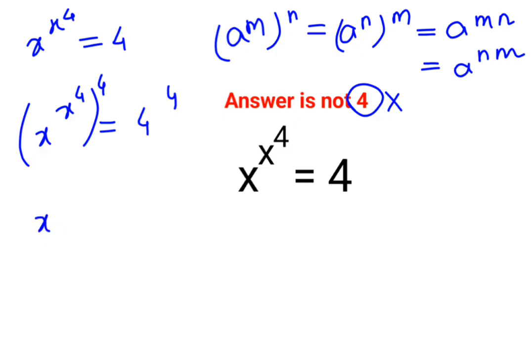So here, instead of taking this 4 outside, I can shift it inside. We can write it as x raised to 4, the whole raised to x raised to 4, which is 4 raised to 4.